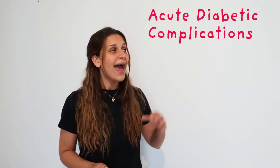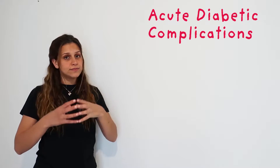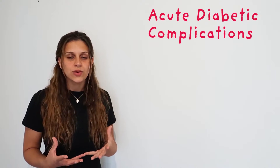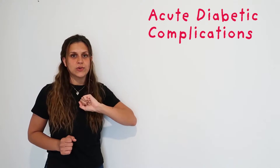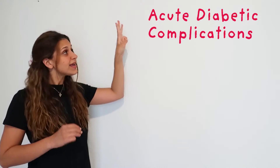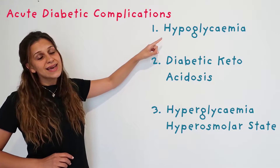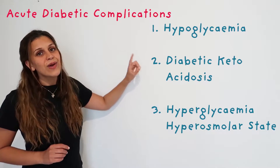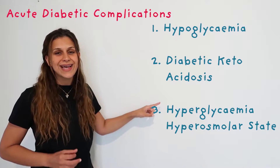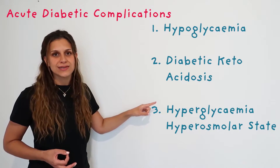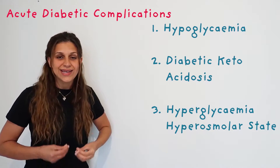Today we will be discussing acute diabetic complications. What I mean by acute is that these situations happen within a few minutes, and if you do not take action right away, these can be life-threatening. There are three main problems: the first one is hypoglycemia, the second is diabetic ketoacidosis, and the third is hyperglycemia hyperosmolar state. All of these are very serious and require immediate action.